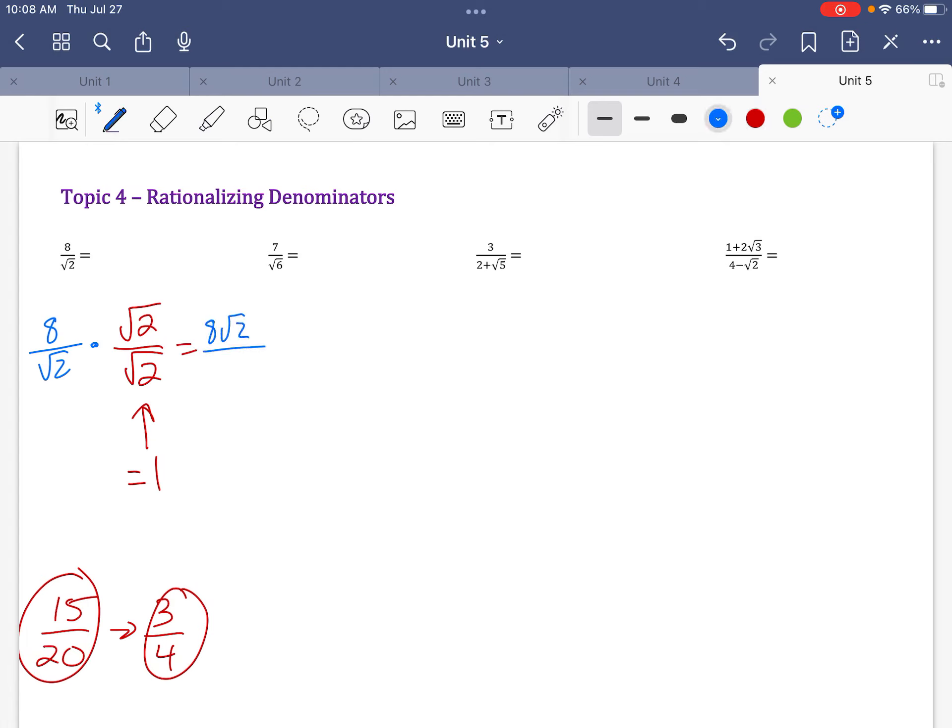All right, so when we do this, we get 8 radical 2 on top, and on the bottom, 2 pops out. Now, I would be done, but I do notice that this 8 and this 2 reduce to a 4. So I get 4 radical 2.